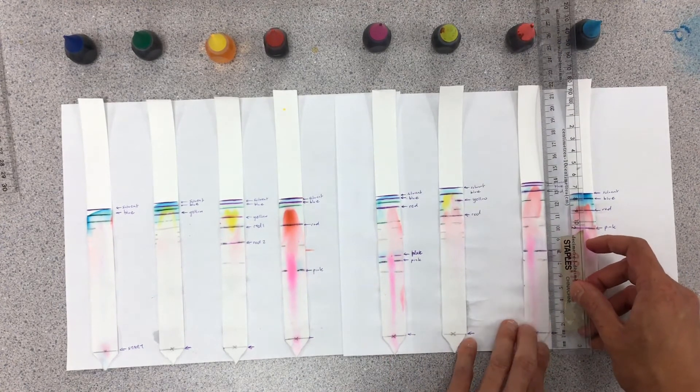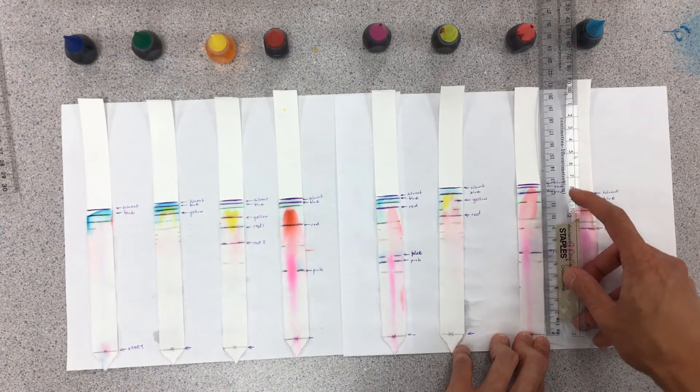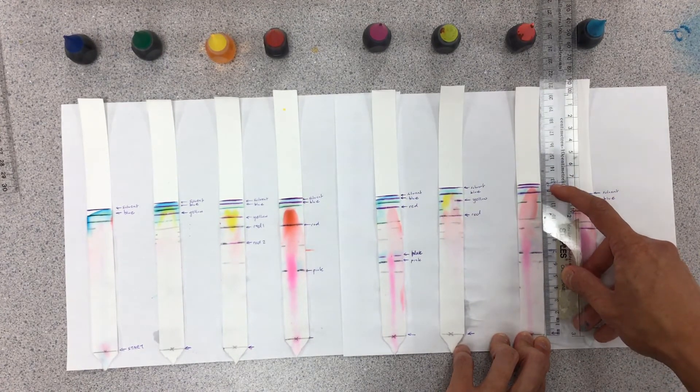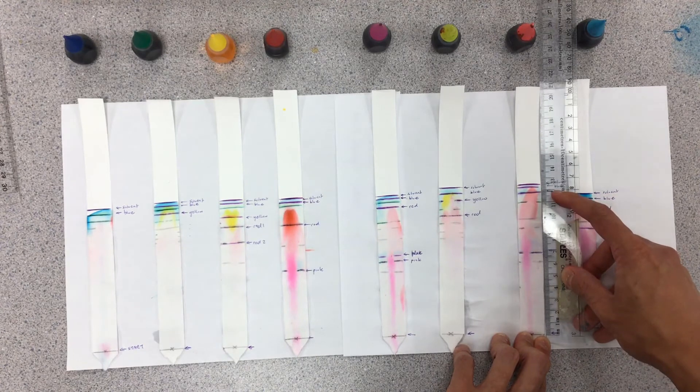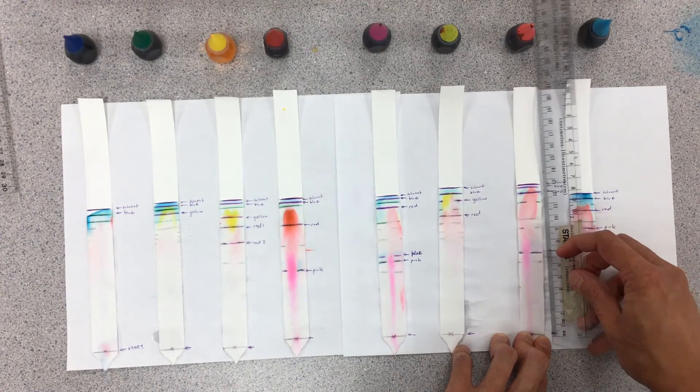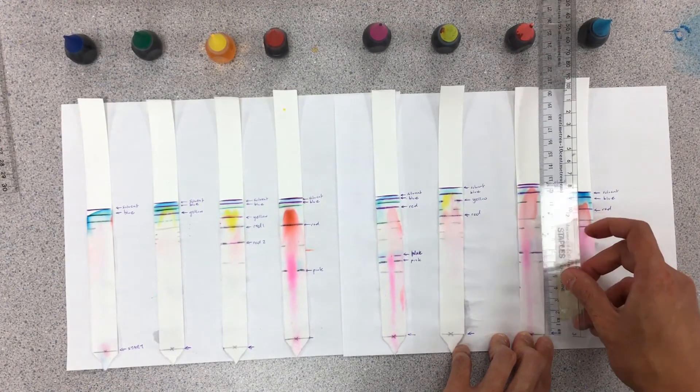Moving on to the second to last one, measuring from the start of our race, from the starting line, the solvent has gone upwards to about 12.5. Blue is about 12.3. This red line is about 12, maybe a little bit under 12, so 11.9. We have a pink line here, probably about 6.8 or so.